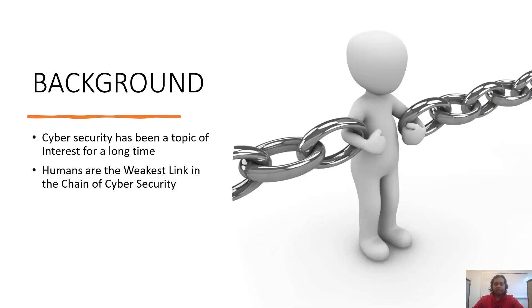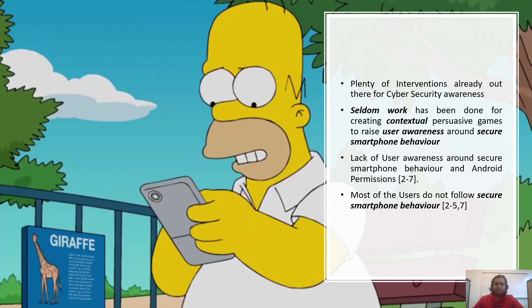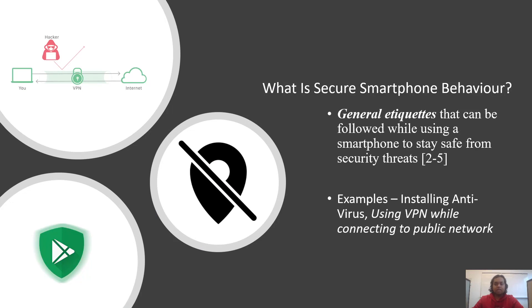Research on cybersecurity has been done for a long time, but the late realization of users being targeted has led to pondering about user awareness and usable security. Seldom work has been done on creating contextual games to raise user awareness around smartphone security. Researchers have shown that awareness among users is low when most of the users do not follow secure smartphone behavior. We refer to the general etiquettes that can be followed to use a smartphone safely as secure smartphone behavior — for example, installing an antivirus or using a VPN to connect to a public network.